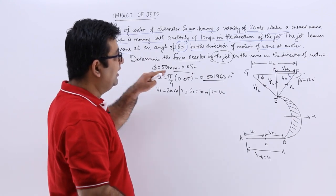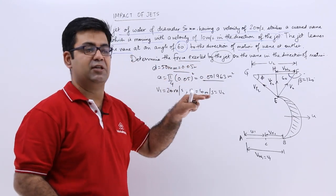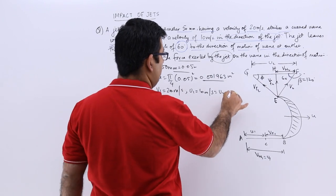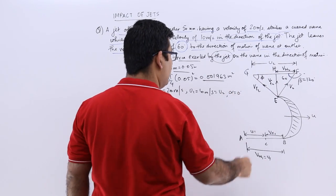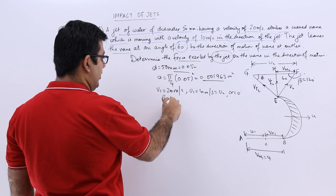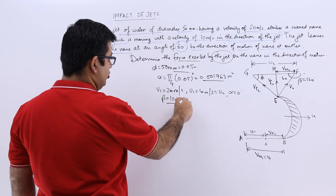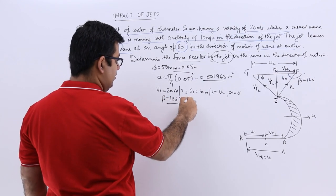Now, both the jet and the blade are moving in the same direction, so alpha would be 0. We have found out beta to be 120, which is obtuse.